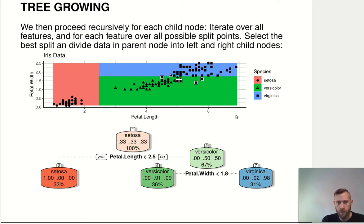So now I have two very pure nodes already. This one is 98% virginica and the other one is 91% versicolor. And you see, there is some misclassification happening here.